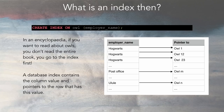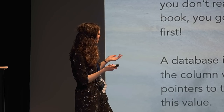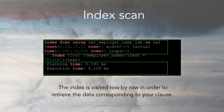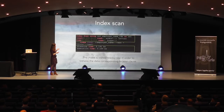Now, with the index created, running the same query uses an index scan and it's way faster — dropping from one millisecond to 0.01 milliseconds. What happens is the database visits the index, selects values matching your WHERE clause, and visits each matching row one at a time.